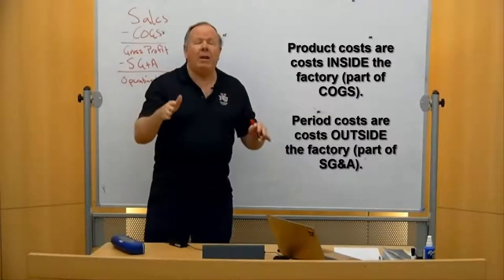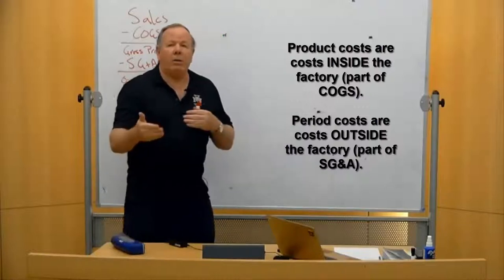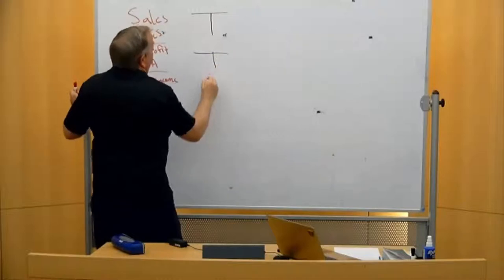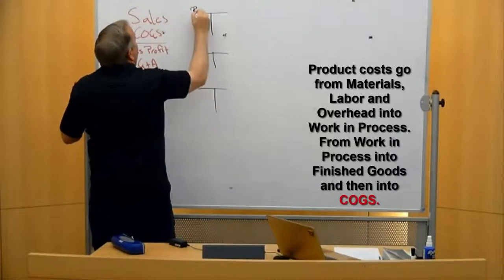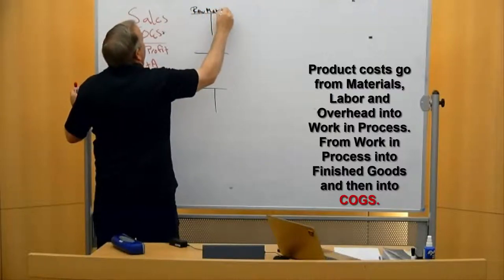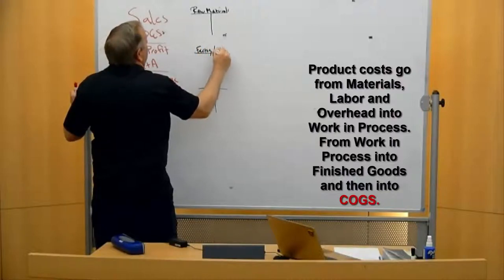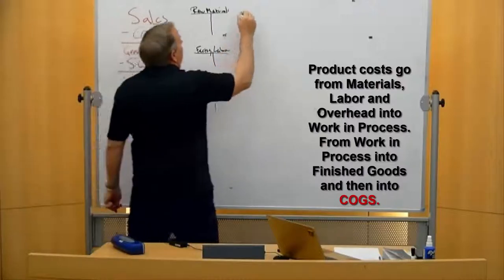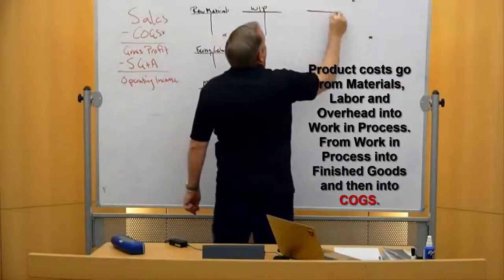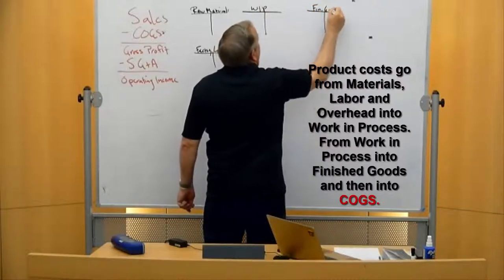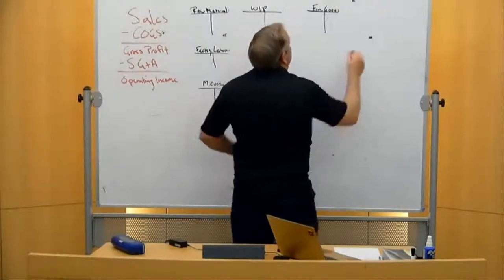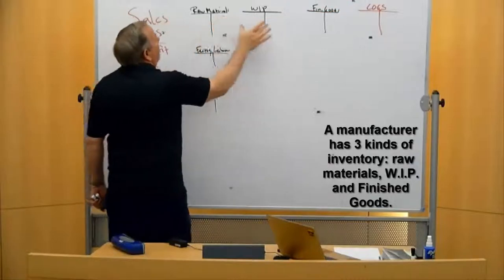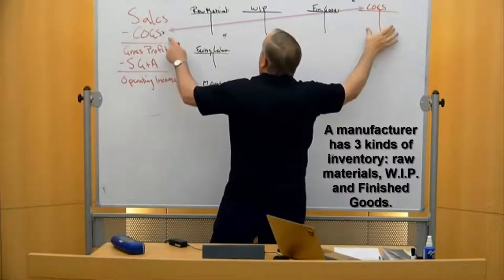Any cost inside the factory is a product cost and will be included as part of the cost of making our thing. Those costs flow through our T-accounts — we have raw materials, factory labor, and manufacturing overhead. Materials, labor, and overhead move into work in process, then into finished goods, and finally when we sell our stuff those costs hit the income statement.